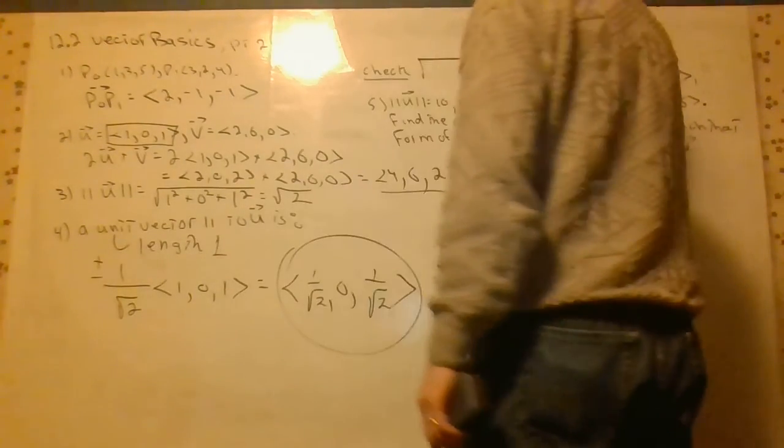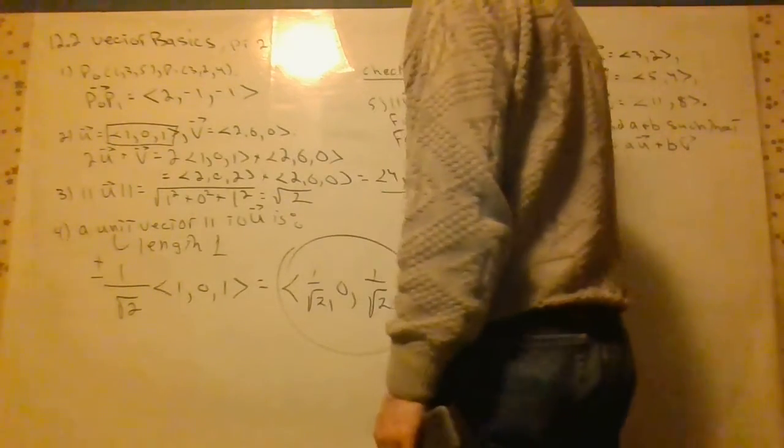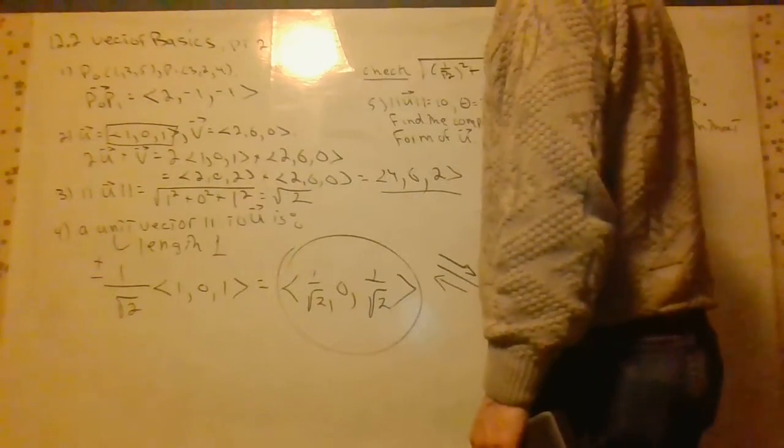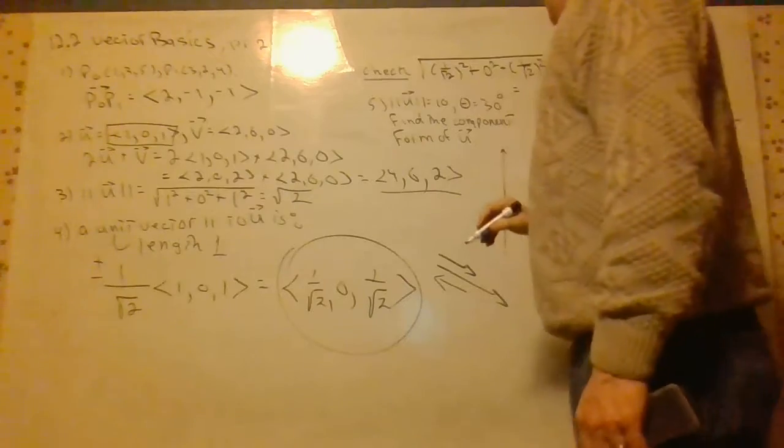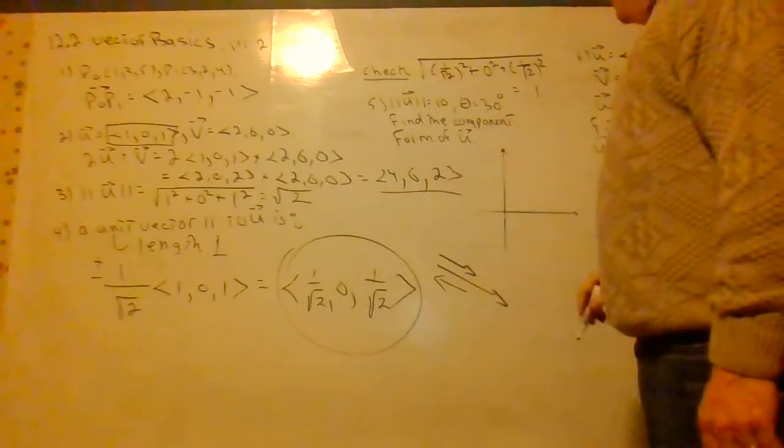Square root of 1 over square root of 2 squared plus 0 squared. And guess what? That's a half plus a half is 1 and we just get 1.